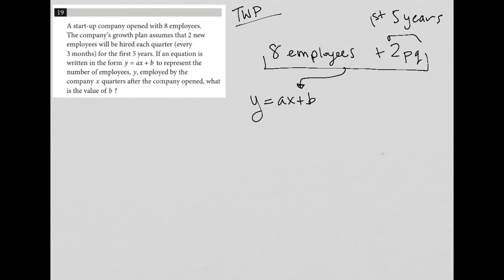So I have this Y equals AX plus B. This looks a lot like Y equals MX plus B, so I can't shake that out of my mind. In which case, if I were dealing with Y equals MX plus B, I know that the B is my Y intercept or the starting point of my graph in the positive direction. So I know that B should be eight.